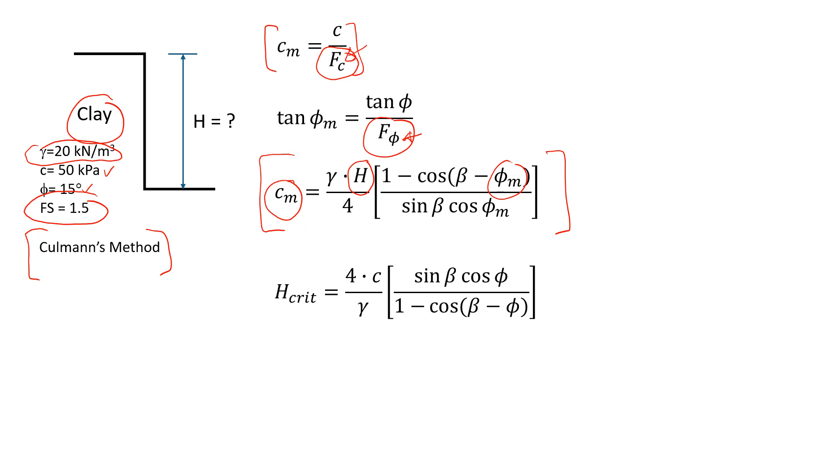In this case we know the cohesion of the soil is 50, and we're going to divide it by the safety factor of 1.5. That will give us a value of 33.3 kPa.